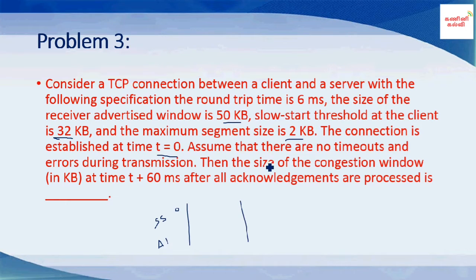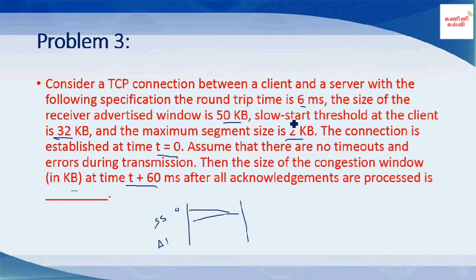We need to find the size of the congestion window in KB at time T plus 60 milliseconds. The round trip time is 6 milliseconds, so at time 0, data is sent and acknowledgement arrives at 6ms — that is 1 round trip time. At time 60ms we have completed 10 round trip times.